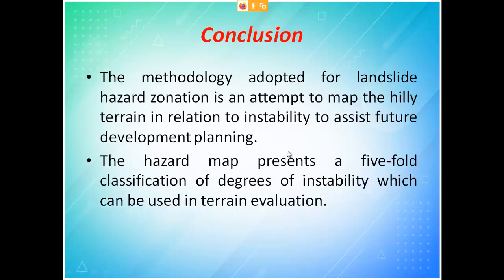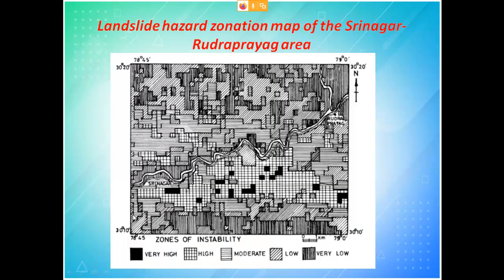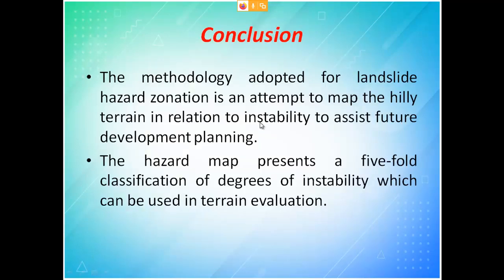The conclusion states that the methodology adopted for landslide hazard zonation maps the hilly terrain in relation to instability to assist further development planning. The hazard map presents a five-fold classification of degree of instability, which can be used for terrain evaluation. This five-fold classification clearly categorizes the degree of instability. With this, the first case study is complete. You now understand how to perform a case study and write a report.